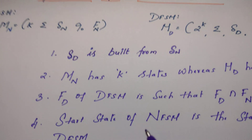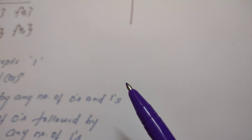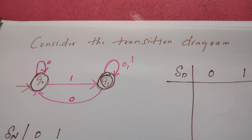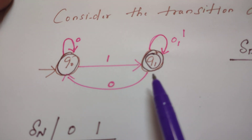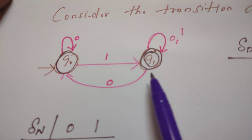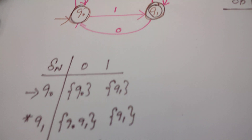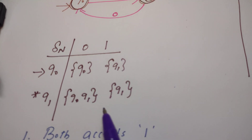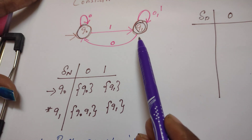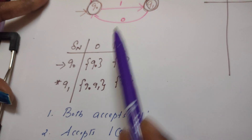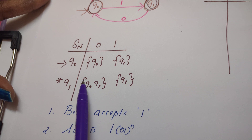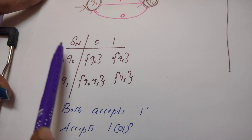Now, this is the problem I have taken. The transition diagram is given, and for the given transition diagram I have written the transition table. The transition diagram for NFSM is given here. Let us look into the transition table now.